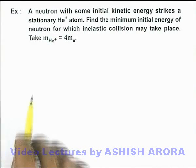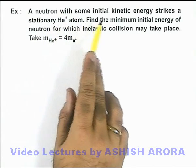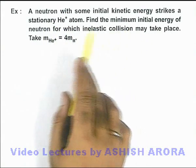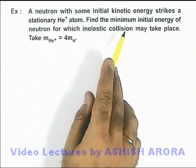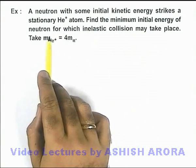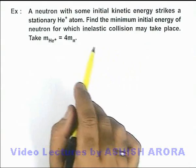In this example we are given that a neutron with some initial kinetic energy strikes a stationary helium atom, and we are required to find the minimum initial energy of the neutron for which an inelastic collision may take place.